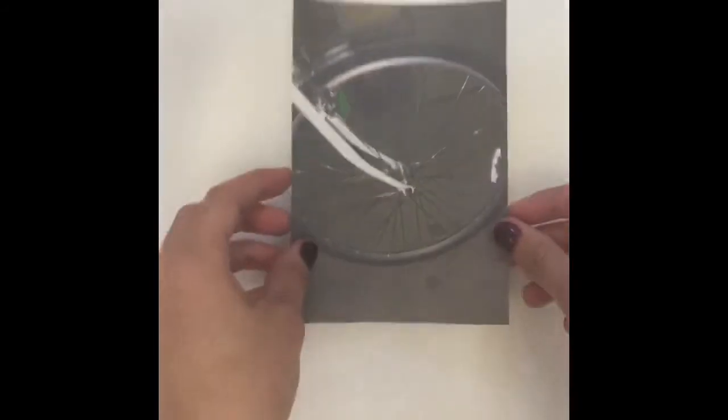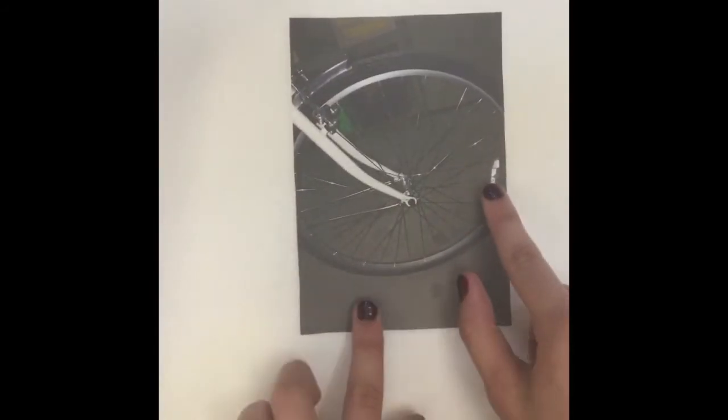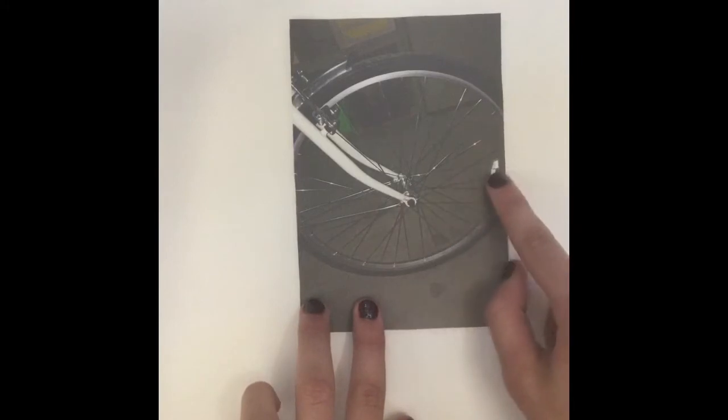We will be examining how a sine function can be used to find the height off the ground of a reflector attached to the spokes on a bicycle wheel as shown in this picture. Here's the reflector attached to the spokes on the bicycle wheel.